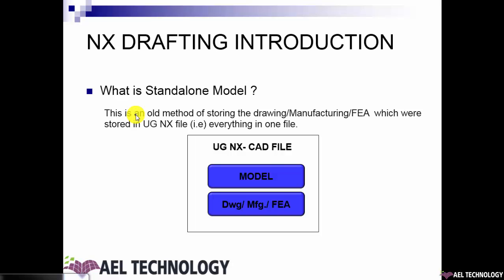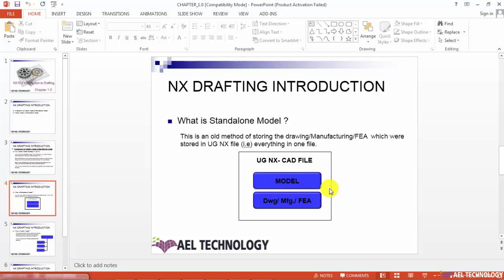What is a standalone model? This is an old method of storing the drawing file, manufacturing file, or FEA file — all stored within the UG NX CAD model. That is, everything in one file. As the picture depicts, you can easily understand that the UG NX CAD file contains a model file along with drawing, manufacturing, or FEA files. Let us go to the UG environment and see how a standalone file will look.